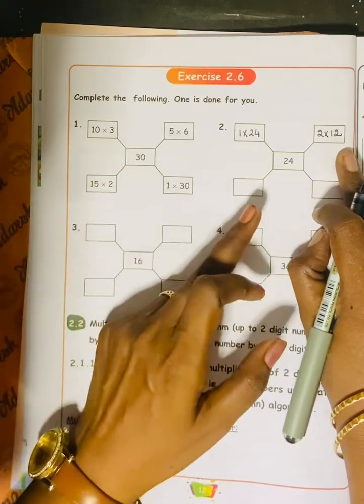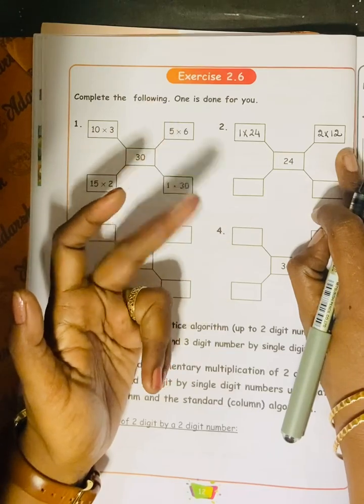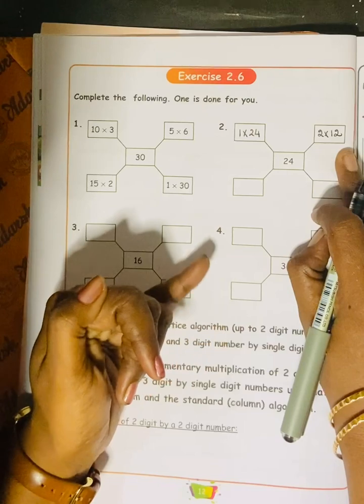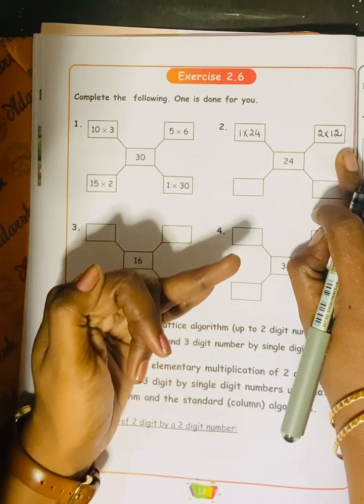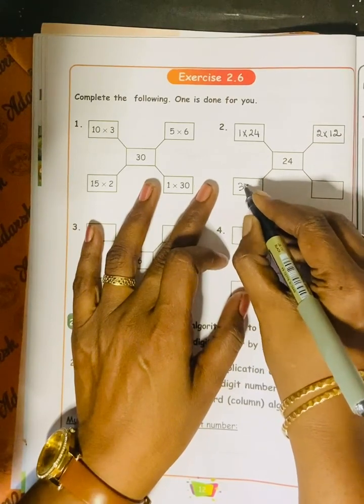3 tables. 3 tables for 24. You have to say 3 ones are, 3 twos are, 6 threes are, 9 threes are, 12 threes are, 15 threes are, 18 threes are, 21 threes are, 24. So, 3 into 8. Then, 4 tables. 4 tables is 4 into 6.